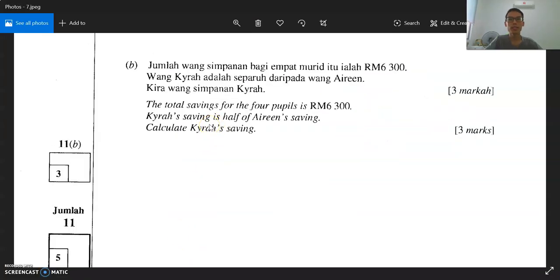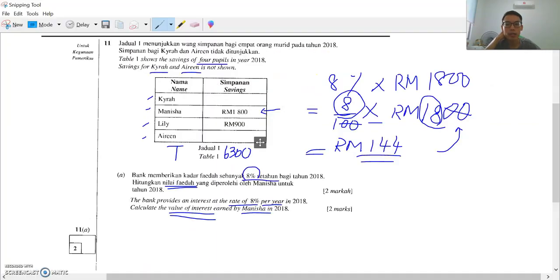Kaira's saving is half of Irene's saving. Wang Kaira adalah separuh daripada wang Irene. That means who has more money? Irene has more money, because Kaira's saving is only half, separuh saja daripada Irene's saving. That means if Irene has two ringgit, Kaira only has one, because it's only half. The half of two is one.